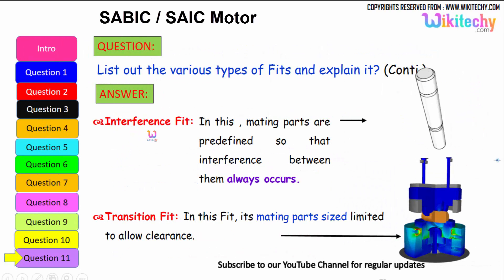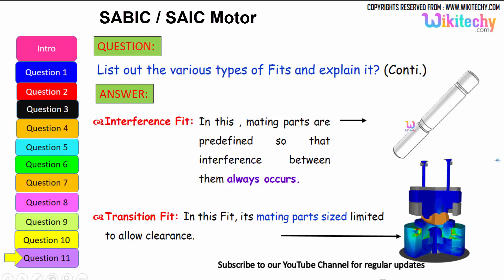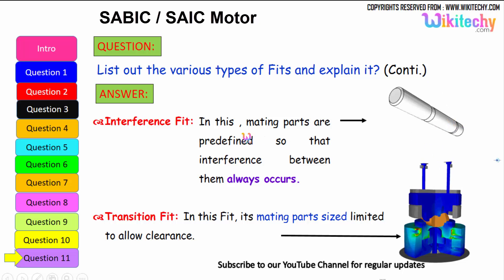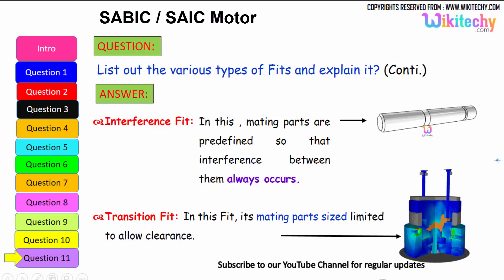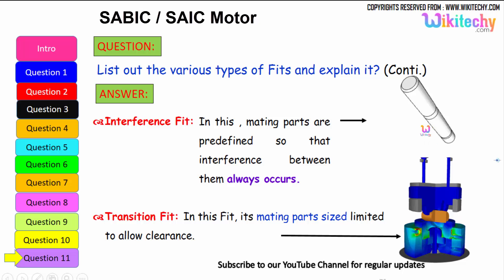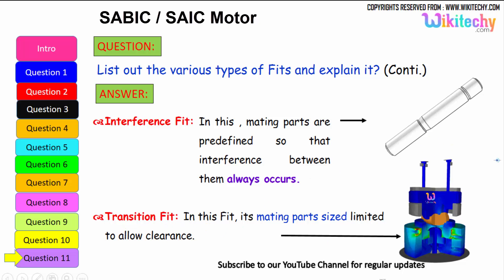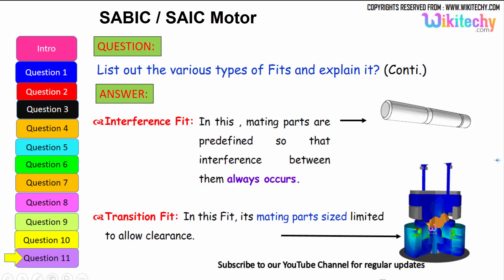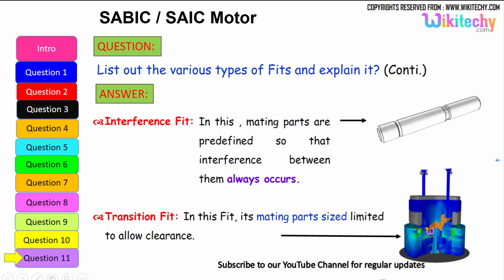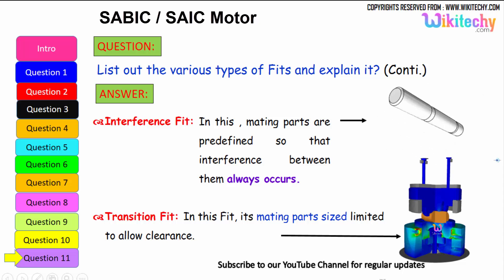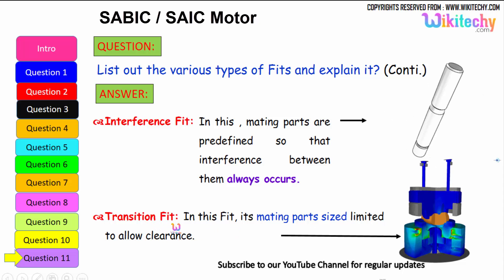In the interference fit, the mating parts are predefined such that interference between them always occurs. The final type, transition fit, is one where the mating parts' size is limited to a low clearance — you should not have exact fitting as it may cause breakage. That is your transition fit.